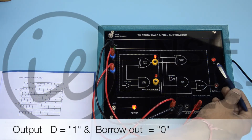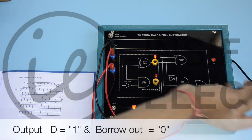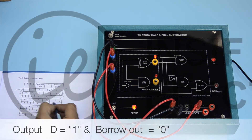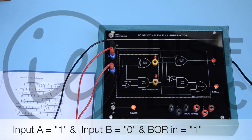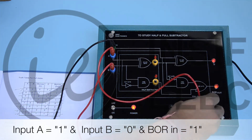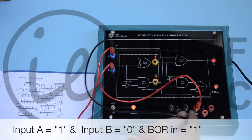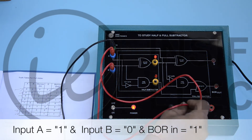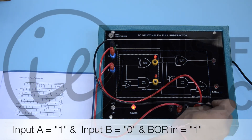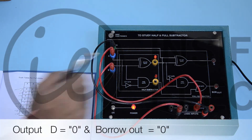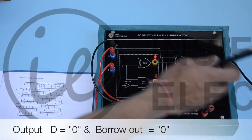The output is 1, 0. Now connect A input to logic 1, B input to logic 0, and borrow in to 1. The output is 0, 0.